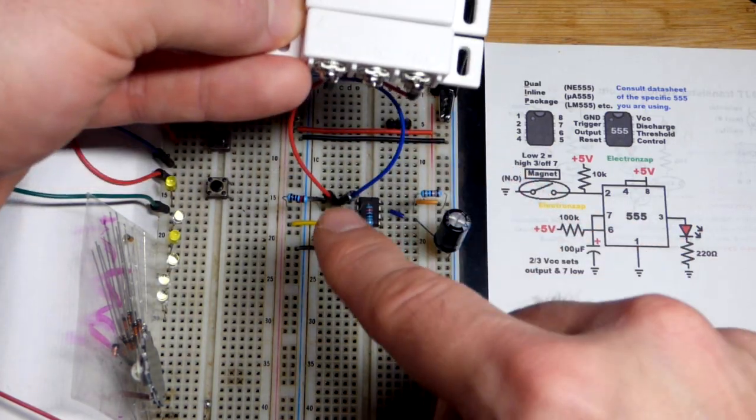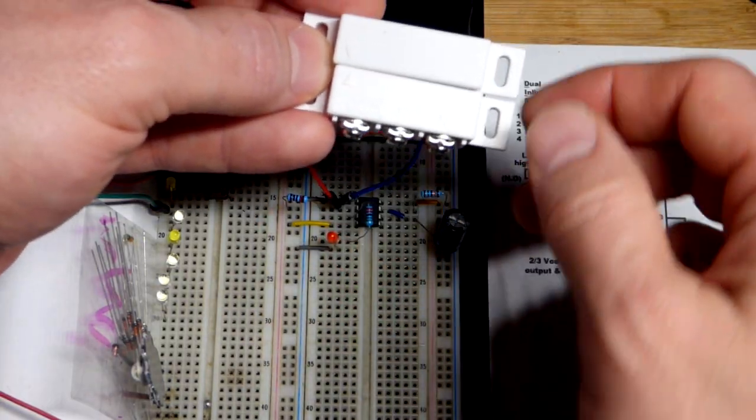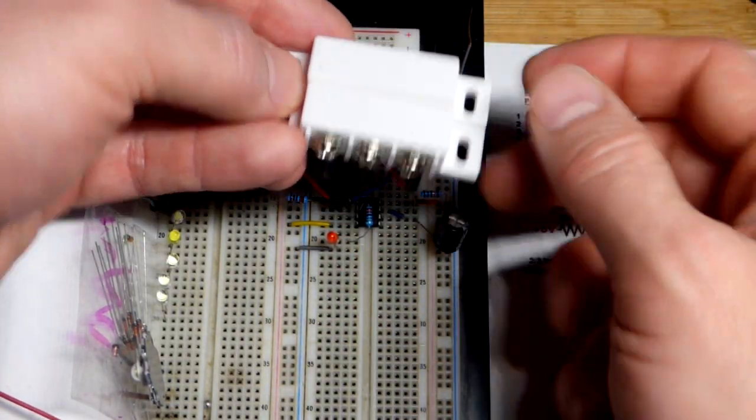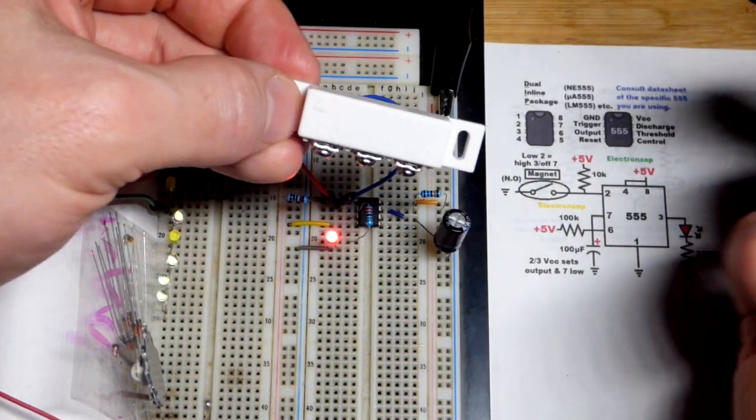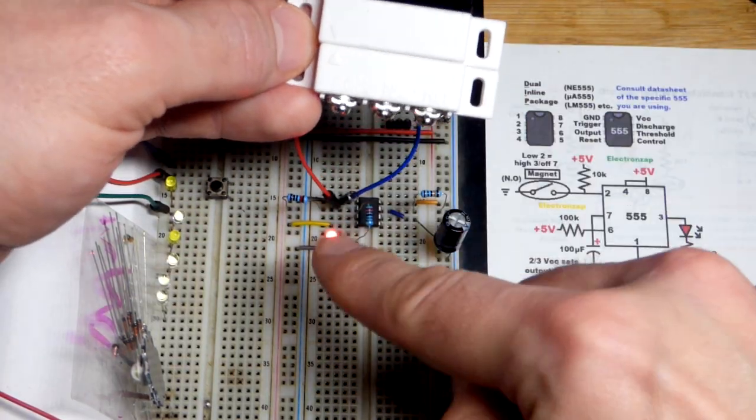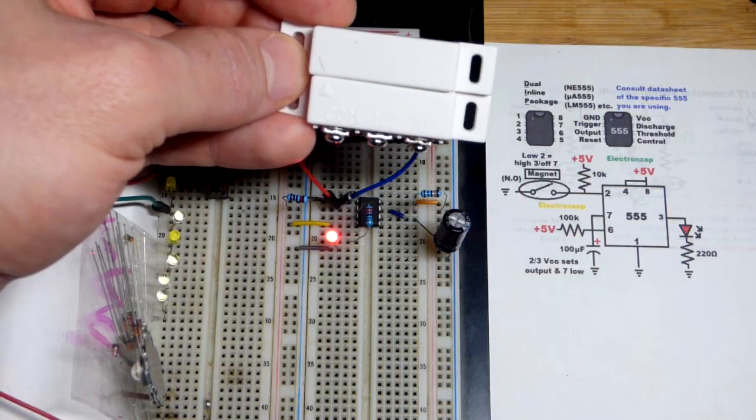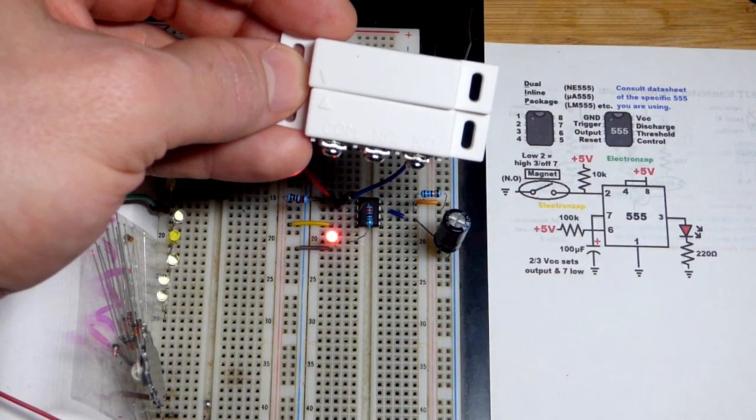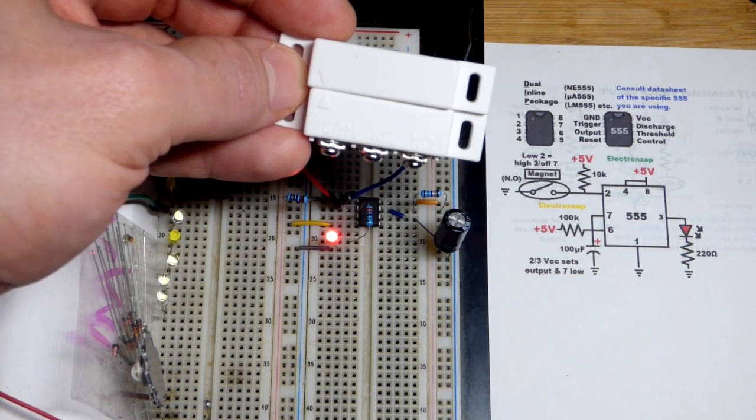It's open, it's off, we are not connected to ground. We have a pull-up resistor going to the trigger pin. When I remove the magnet, we send a signal to the trigger pin which sets the output high for probably about 10 seconds or so, and then it's going to go back to low. That's as long as we disconnect the switch again.